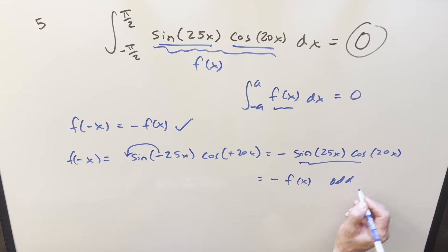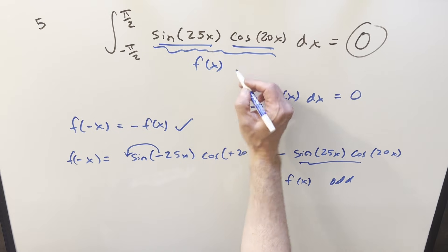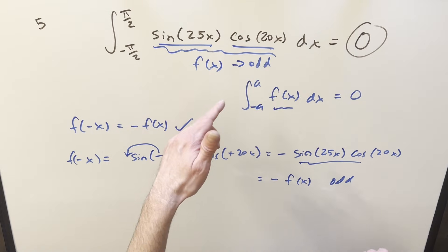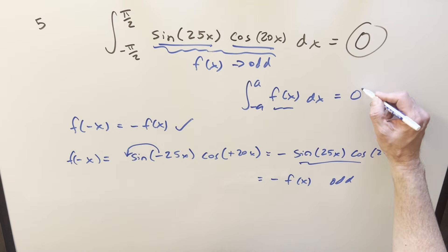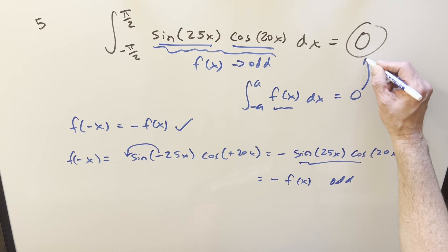and so this thing, well not this thing, but any of it, this thing is odd. And because it's odd, that allows us to use this principle here and go right to our solution of zero.